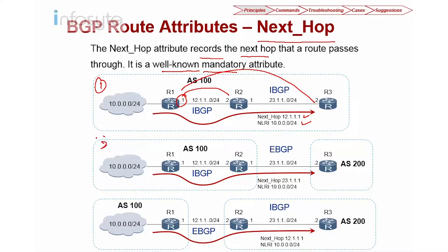In the second scenario, we have two ASs: AS100 and AS200. R1 advertises to R2 as IBGP, same as the previous example. But now, if R2 advertises to R3, the relationship is EBGP. Since the relationship is EBGP, R2 is going to change its next hop to itself. So the NLRI of the 10 network will show a next hop of 23.1.1.1 because R2 and R3 are EBGP peers.